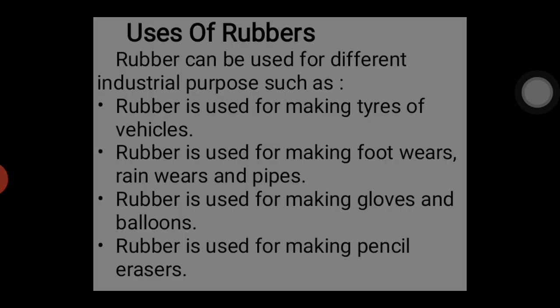Let's look at the uses of rubber. Rubber can be used for different industrial purposes to make different materials. We can use rubber to make tires for vehicles. We can use it to make footwear — such as rubber rain boots and raincoats. We can also use it to make pipes, and rubber can be used to make gloves.